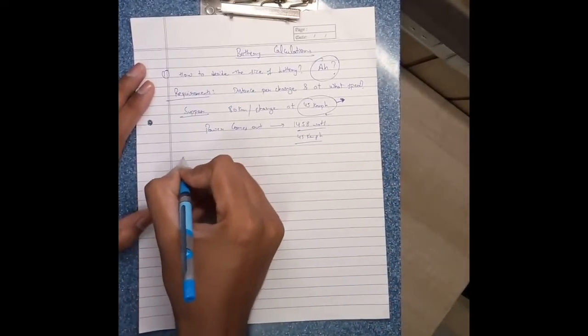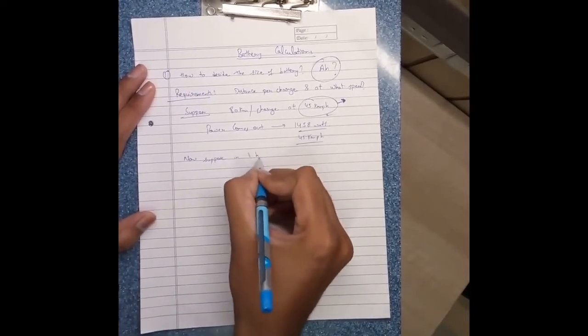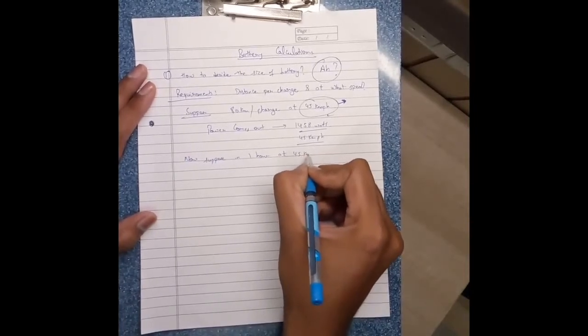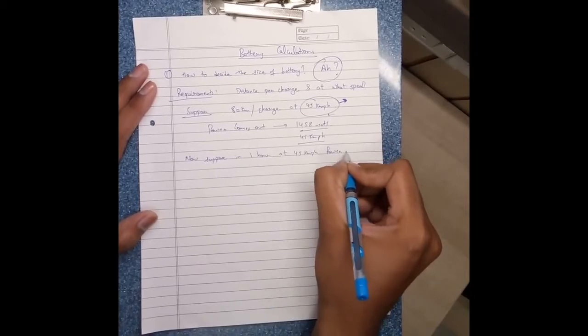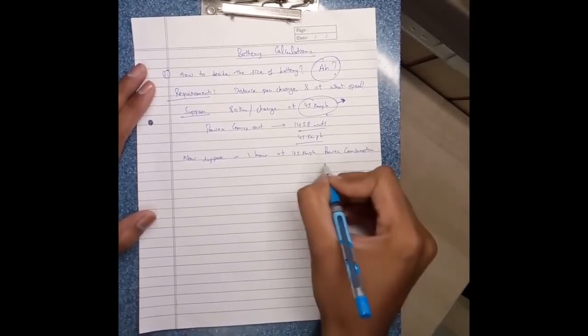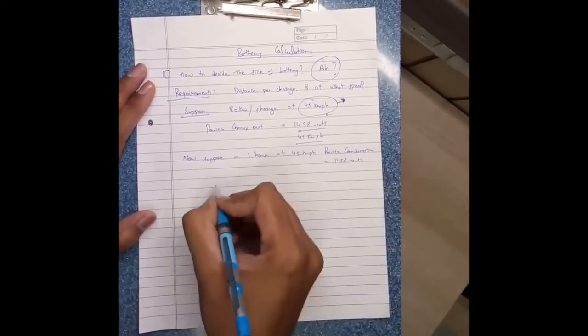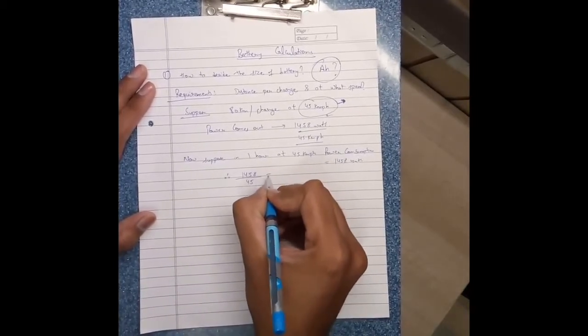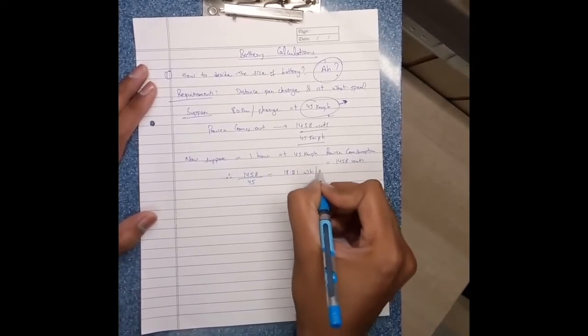Now suppose at 45 km per hour power consumption is supposed to 1458 watt. Therefore, 1458 divided by 45 equals to 18.21 watt per kilometer.